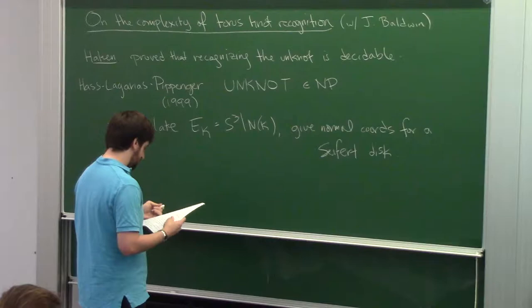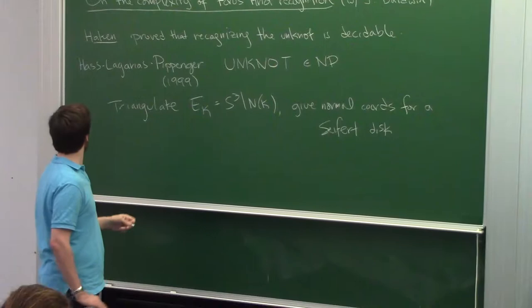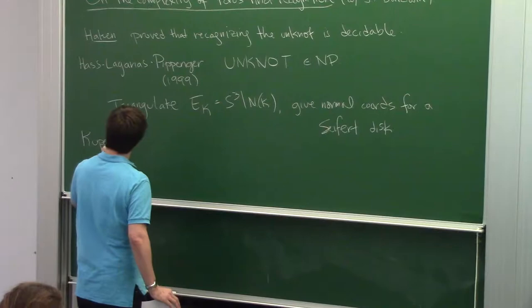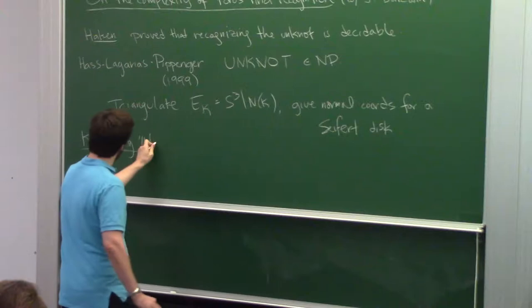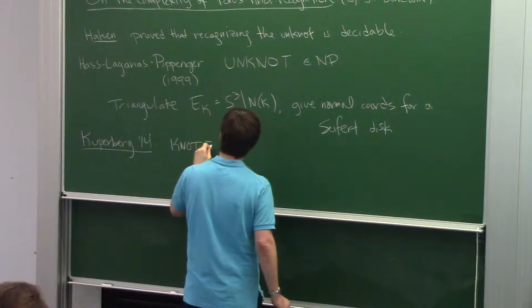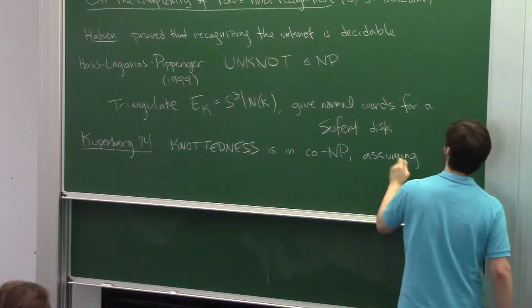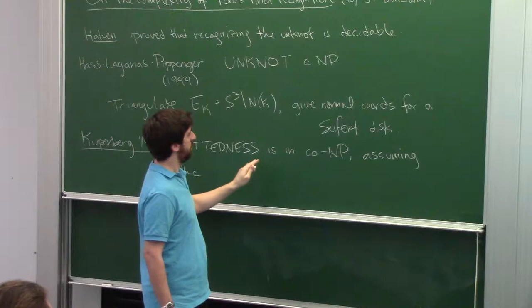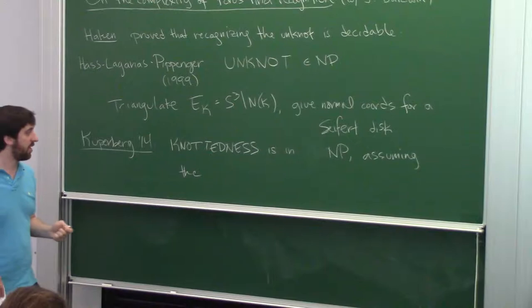That's detecting, or maybe certifying, that something is the unknot. How do you certify the opposite — that it's knotted? About 2014, Greg Kuperberg gave a solution which is simultaneously very short and also very hard to check. He proved that knottedness is in co-NP if we assume the generalized Riemann hypothesis. So knottedness is in co-NP, and unknottedness is in NP. If I give you a knot that's non-trivial, how do you certify that it's actually knotted?